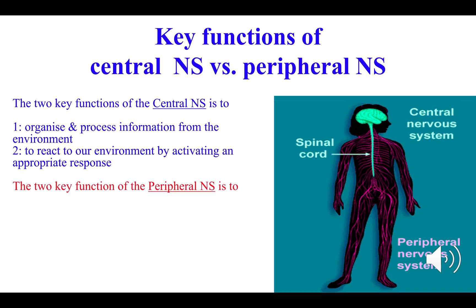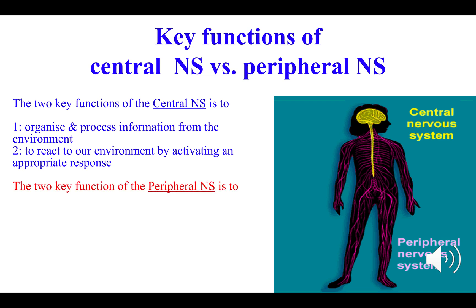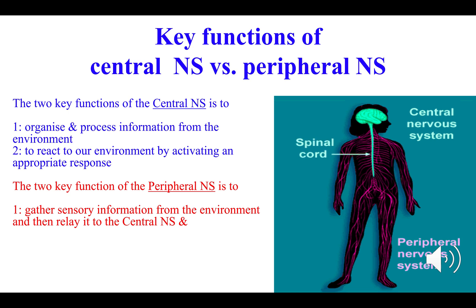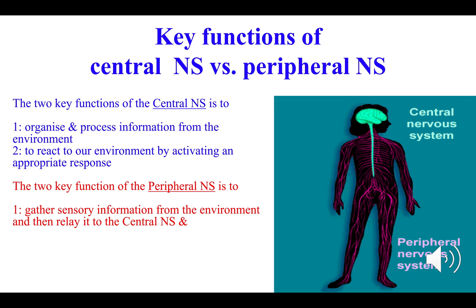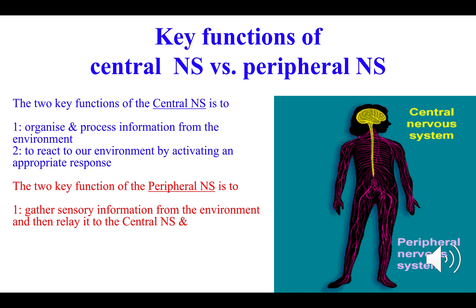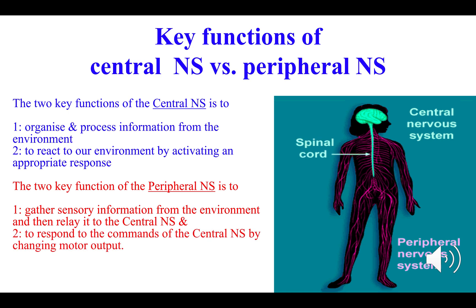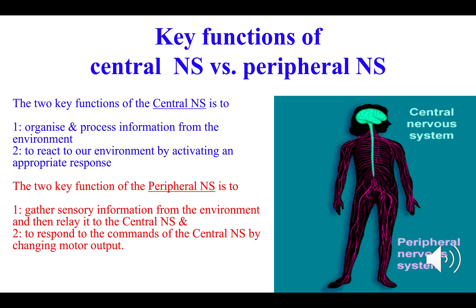In terms of the key functioning of the peripheral nervous system, there are again two key functions. The peripheral nervous system's job is to gather sensory information via either the somatic or the autonomic, via the visceral muscles, and then to convey that information to the central nervous system where it will be processed. The second key function is to execute the commands initiated by the central nervous system by changing activity in the effectors — the muscles, the glands, etc.